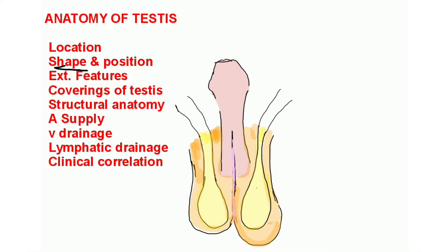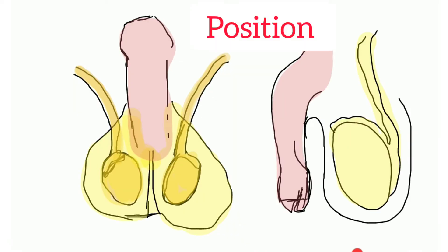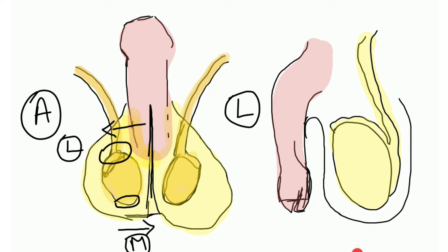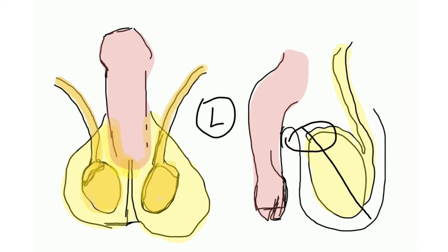The shape is oval, or ellipsoid. Regarding the position of the testes — in the anterior view, the upper pole is located laterally, and the lower pole is placed medially. In the lateral view, both testes are oblique — the upper pole is tilted forward, whereas the lower pole is tilted backward.